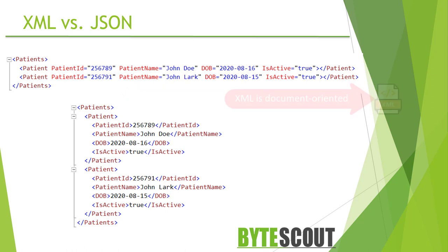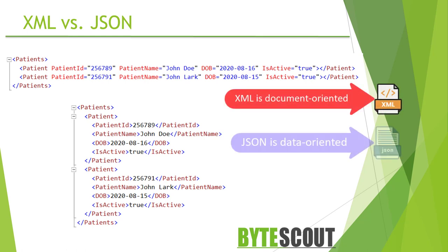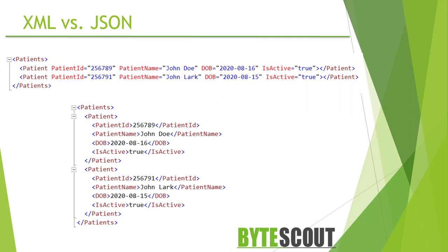XML is document-oriented while JSON is data-oriented, and JSON can be mapped more easily to object-oriented systems. XML is widely adopted by the computer industry, but JSON's simplicity and the ease of converting from XML to JSON makes JSON ultimately more adaptable.